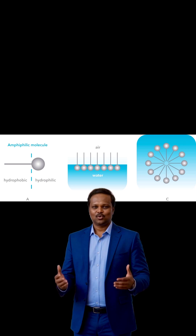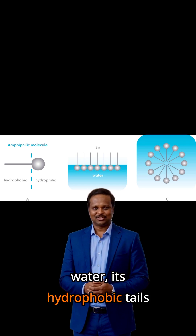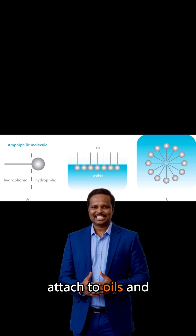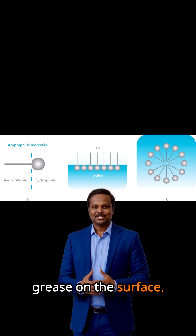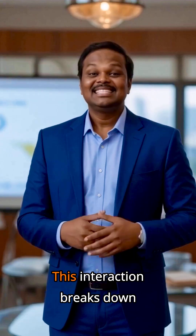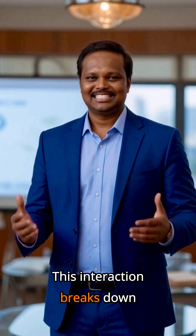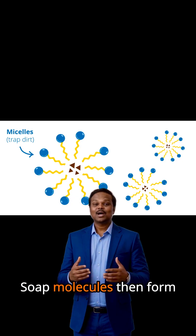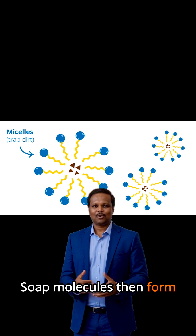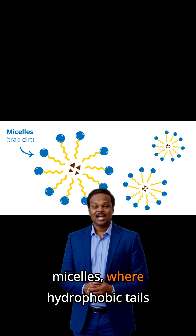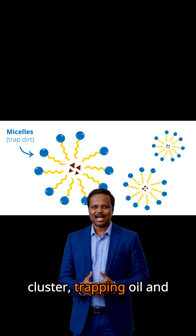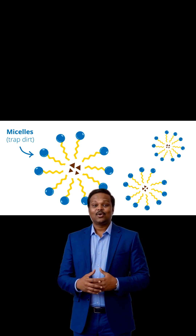When soap mixes with water, its hydrophobic tails attach to oils and grease on the surface. This interaction breaks down large oil deposits into smaller droplets. Soap molecules then form micelles, where hydrophobic tails cluster, trapping oil and grime.